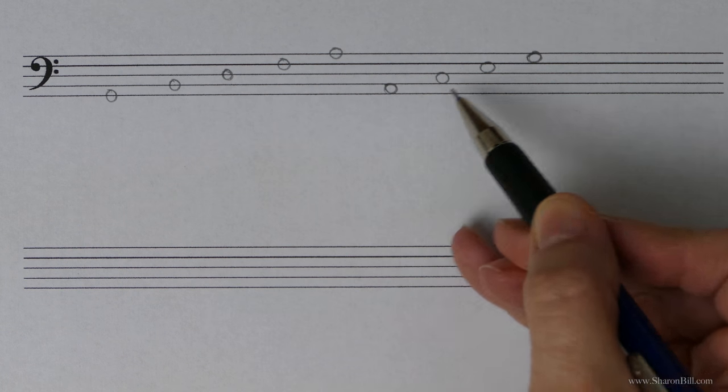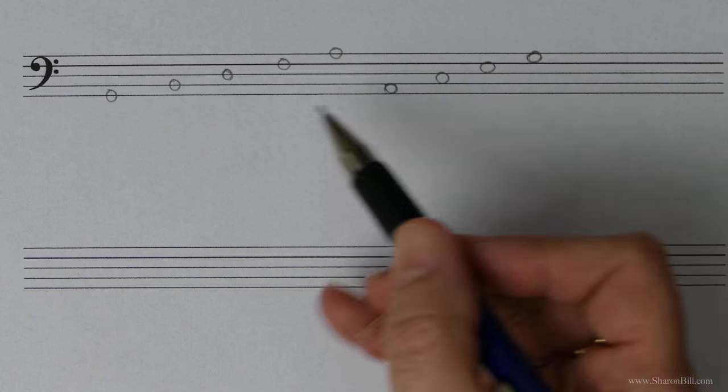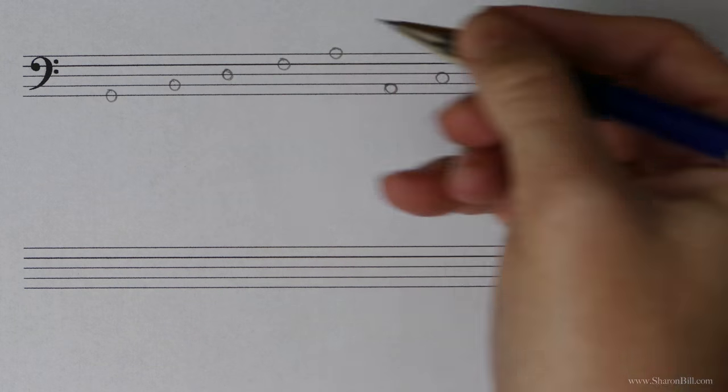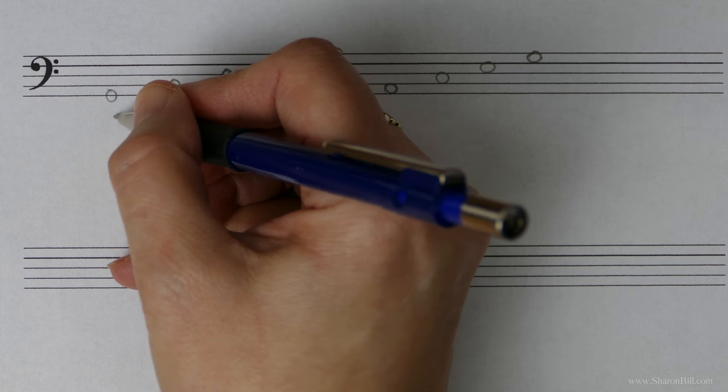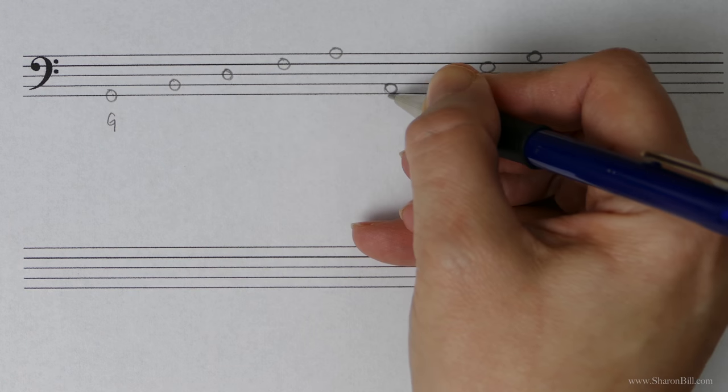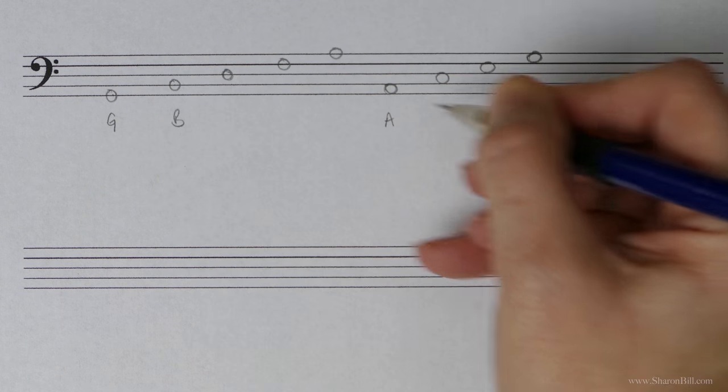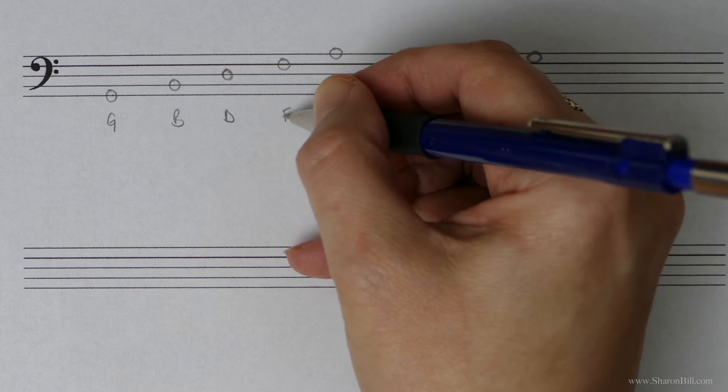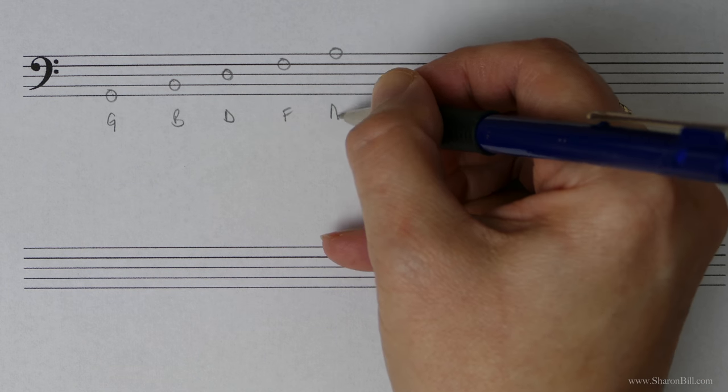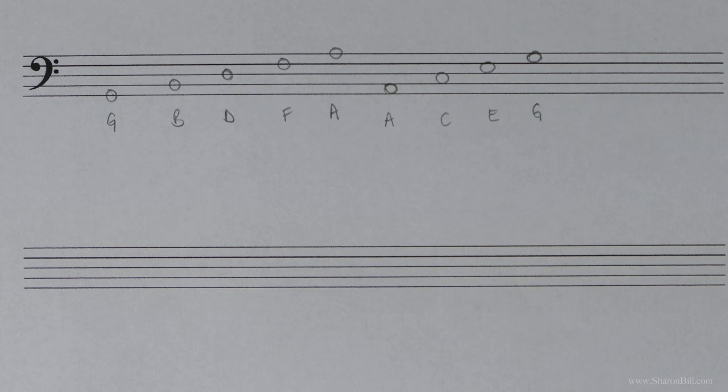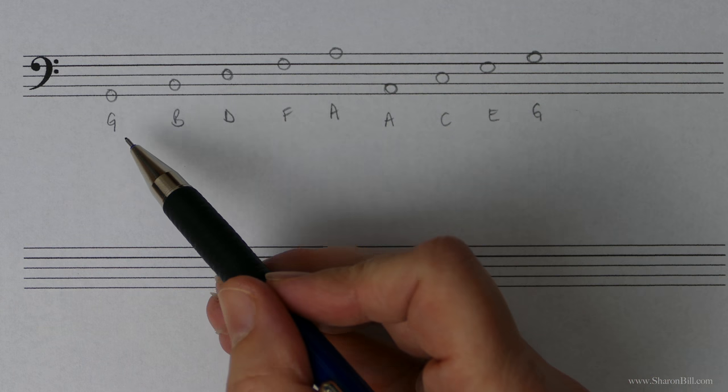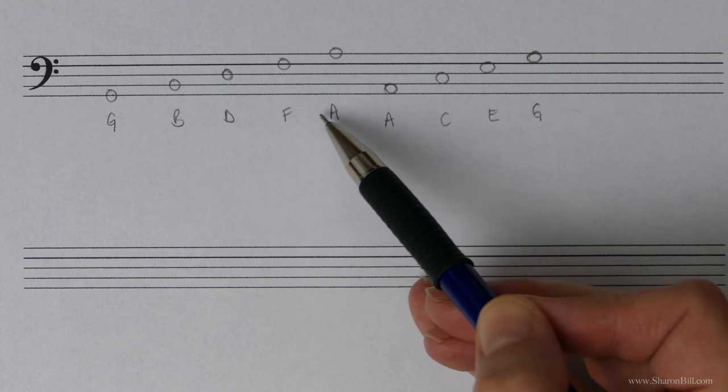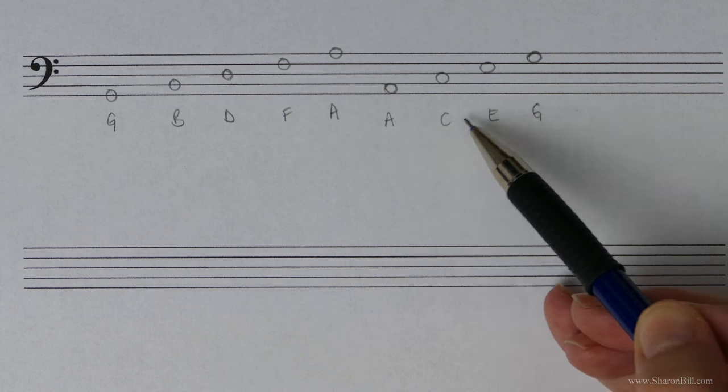Each one of these lines or spaces represents a note. If we're going line, space, line, space, line, we're stepping up next door notes on the instrument. So this is note G, this is note A, B, C, D, E, F, G, A. We can remember this by learning a poem for the lines and spaces: Good Boys Deserve Football Always, or All Cows Eat Grass.